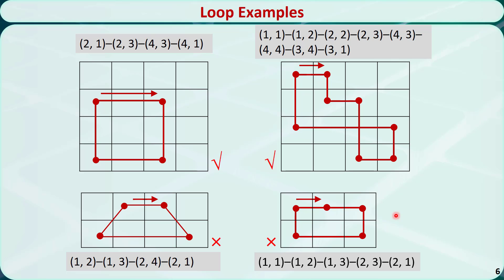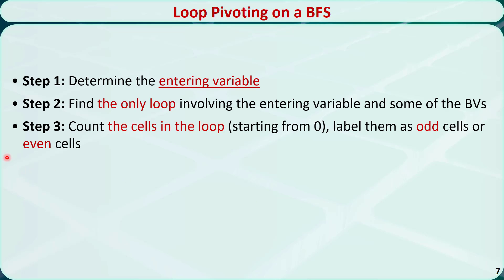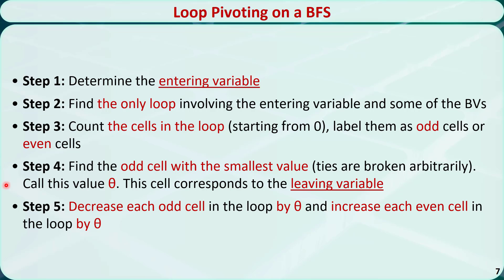After we understand what a loop is, let's take a look at the loop pivoting technique, which is used to go from one basic feasible solution to a better basic feasible solution. Step 1: determine the entering variable. Step 2: find the unique loop that starts from the entering variable and covers some of the basic variables — note that we do not require covering all basic variables. Step 3: count the cells in the loop and label them as odd or even cells; the entering variable is marked 0. Step 4: find the smallest value among all the odd cells — if there are ties, randomly select one. Call this value theta; the variable in that cell will be the leaving variable.